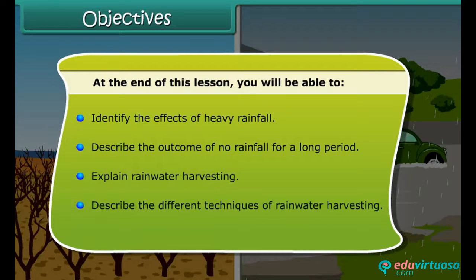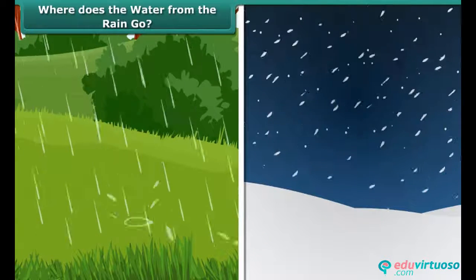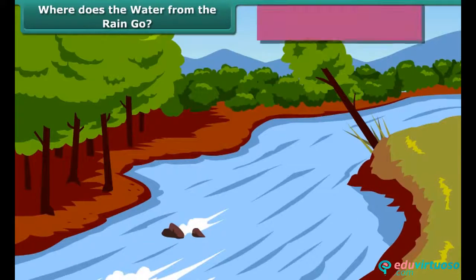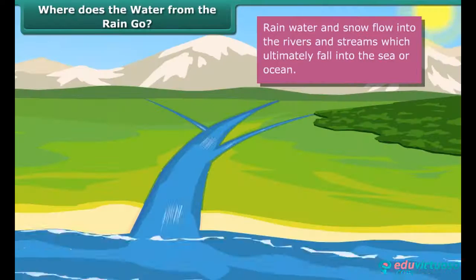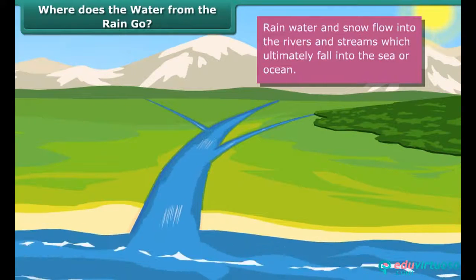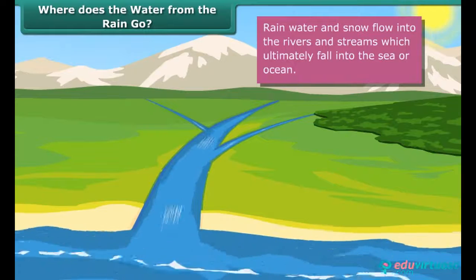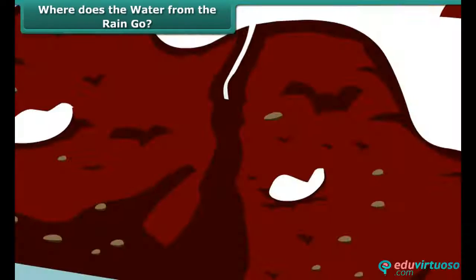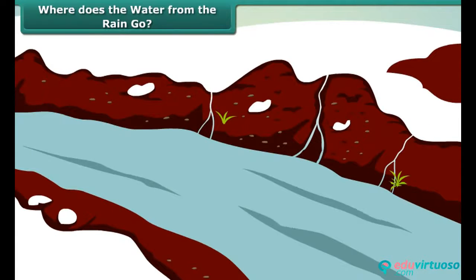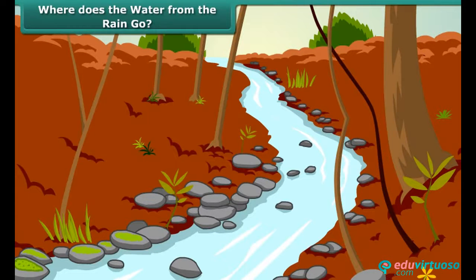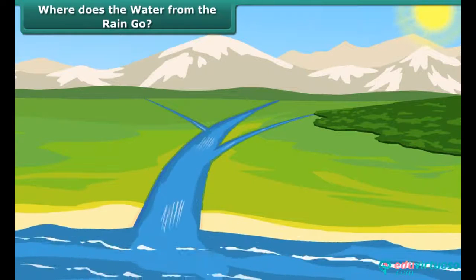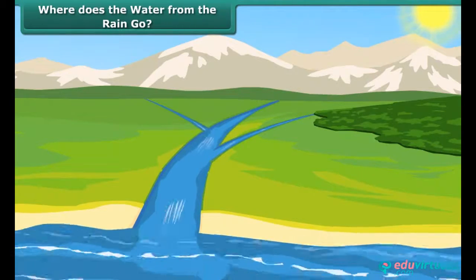Have you ever wondered where the rain and snow goes after reaching Earth? Rainwater flows as streams and fills up ponds, lakes, and rivers. It falls into the seas and oceans. Snow falls on mountains and later melts into water, which flows down the mountains in the form of streams and rivers. Thus, most of the water received from the sky finally flows into the oceans sooner or later.